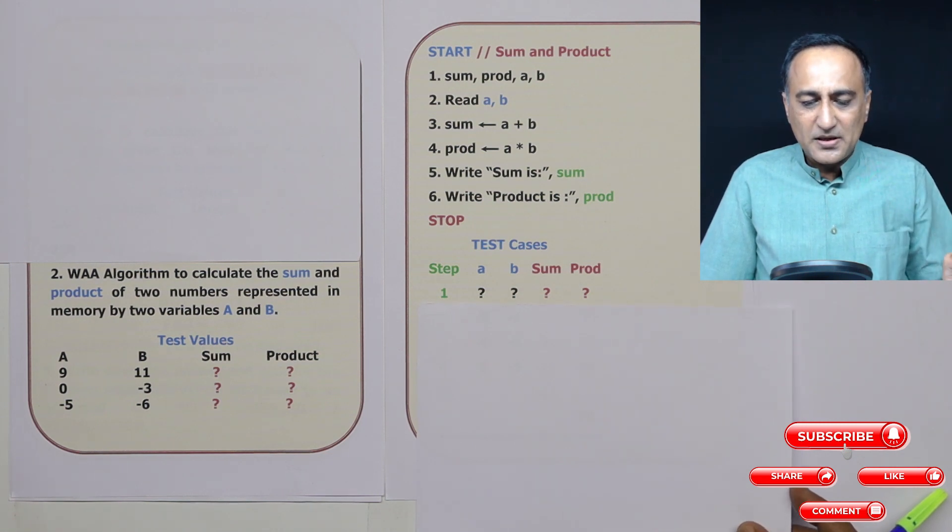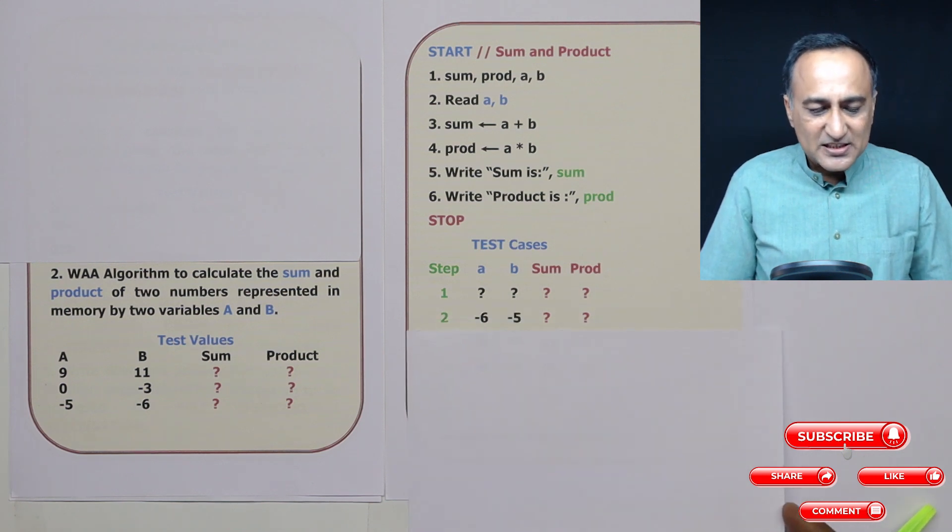In step one, sum, product, A, and B are all empty values. I do not know what values they have. It depends on the computer what random numbers they get assigned.